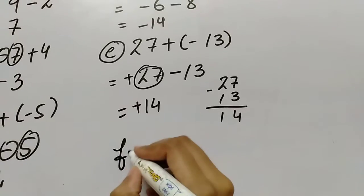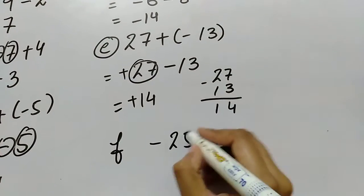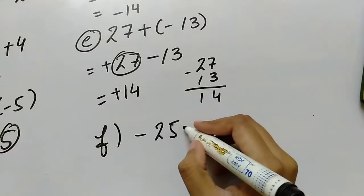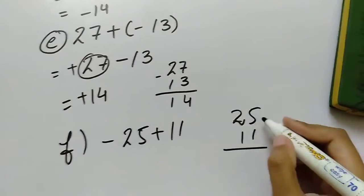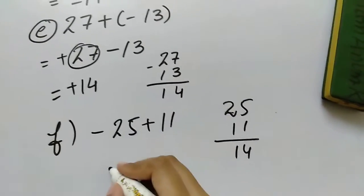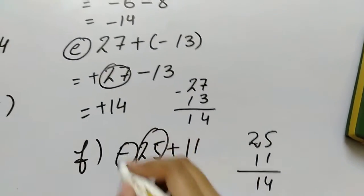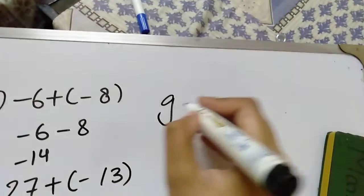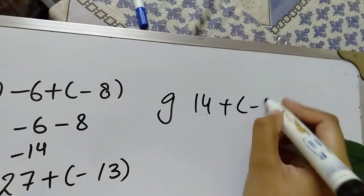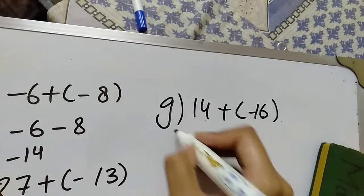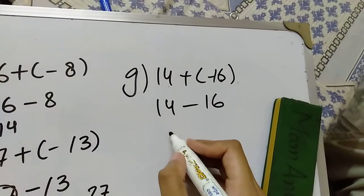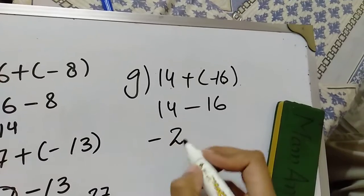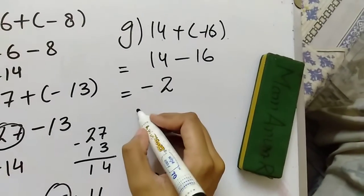We are left with F, G, and H. So I will show you how to solve them. F is minus 25 plus 11. We subtract 25 and 11, it will be 14. With the bigger term being minus it will be minus 14. G is 14 plus minus minus 16. So minus minus is plus, 14 plus 16, but we subtract giving 2, and with the bigger term having the negative sign it will be minus 2.